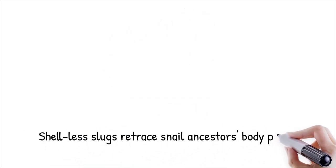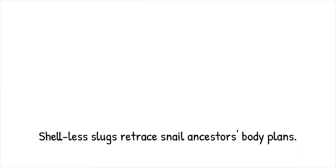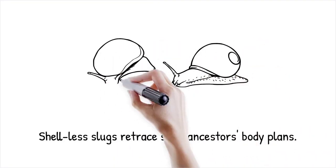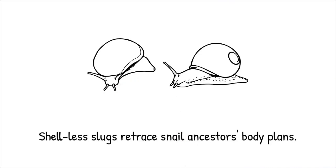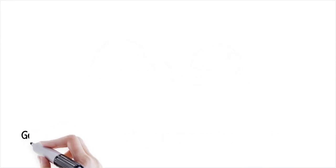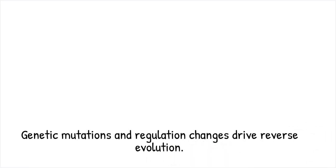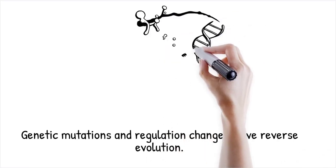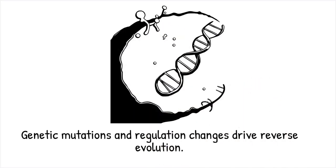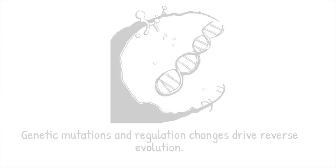Shell-less slugs evolved from shelled snail ancestors display body plans reminiscent of ancestral gastropods — like rolling software updates back to a previous version, reinstating older features at the expense of newer ones. At the molecular level, reverse evolution often stems from mutations that inactivate or delete genes responsible for complex traits. Concurrently, changes in gene regulation, such as promoter loss or microRNA upregulation, can suppress developmental pathways that produce those traits.